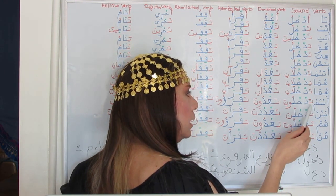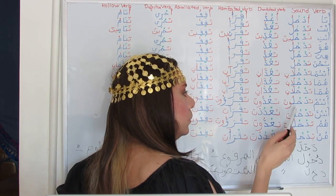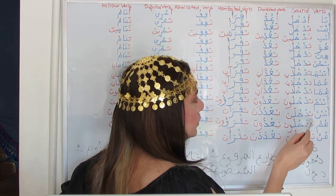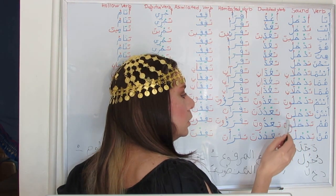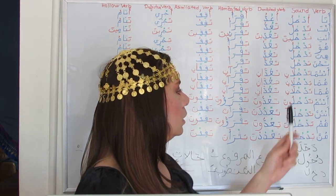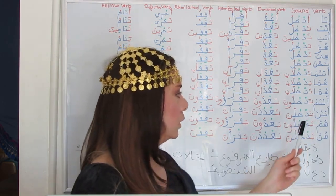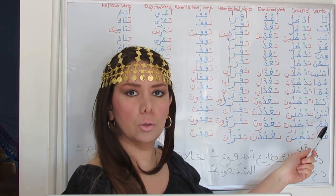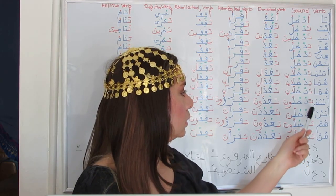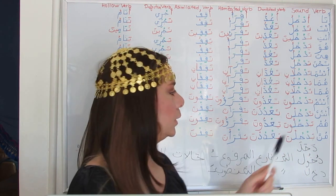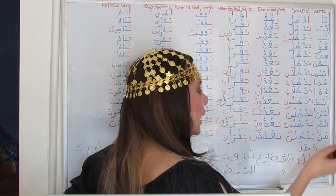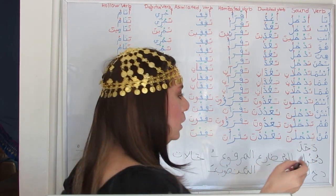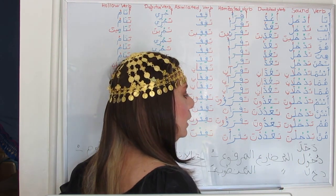Antum tadkhulouna — 'ta' as a prefix and 'una,' preceded by Dhamma to match the long vowel Waw. Antunna tadkhulna — 'ta' as prefix and Nun, which is mostly preceded by Sukun. Hum yadkhuluna is similar to antum, just with the prefix 'ya' instead. Hunna yadkhulna — like antunna, just with a different prefix. Antunna tadkhulna, hunna yadkhulna — Nun preceded by Sukun.